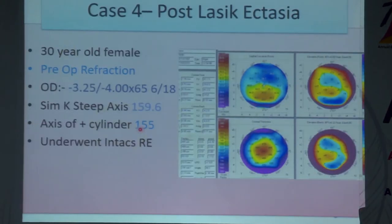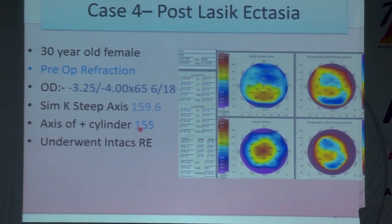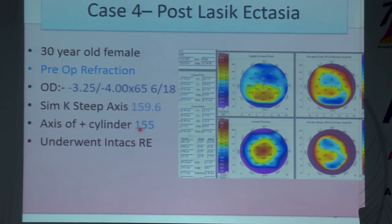Unfortunately, ICRS algorithms are not as mathematical as LASIK. Some patients improve more than others; some improve at 6 months, others continue to improve up to 2 years. It is not as mathematical as laser vision correction, but it gives great benefit.